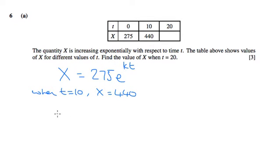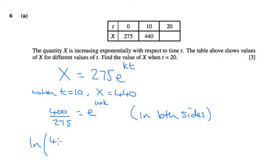So we get 440 over 275 equals e to the 10k. And if I natural log both sides, 440 over 275 is going to equal just 10k. When you natural log an e, this will come to the front and the natural log of e is 1.